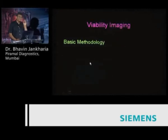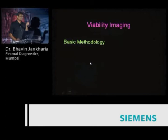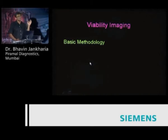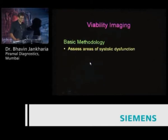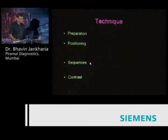The key for viability imaging is two-fold. First, you need to get really good quality images. Second, you need to depict the areas of viable or non-viable myocardium in a way that cardiac surgeons and cardiologists understand, and then make a recommendation on whether to revascularize or not. We assess areas of systolic dysfunction, presence and extent of infarction, and then comment on viable versus non-viable myocardium. No special preparation is required.